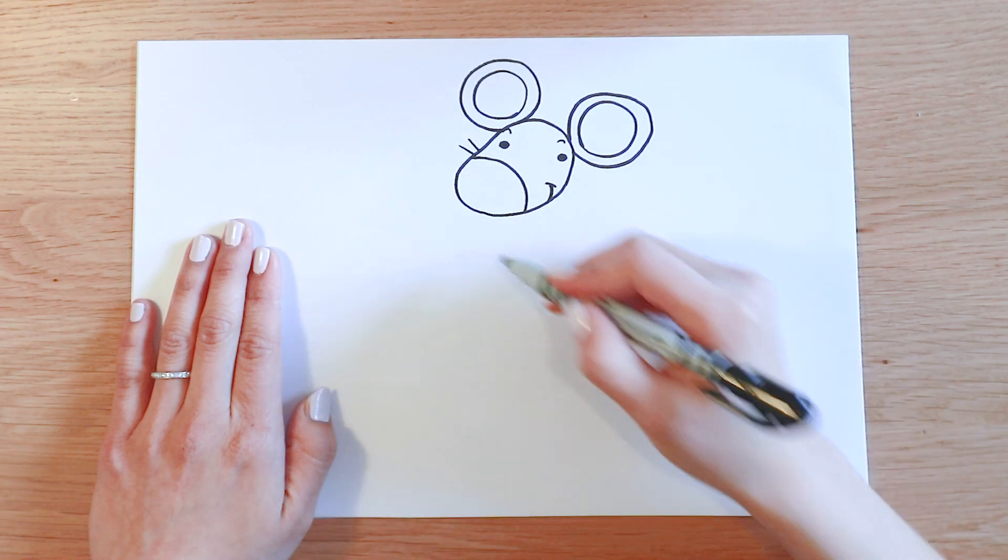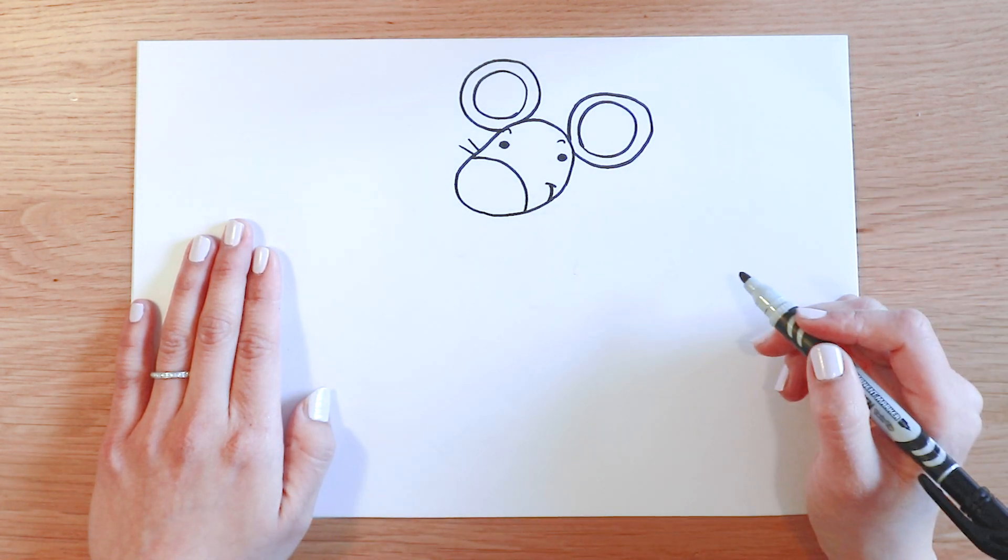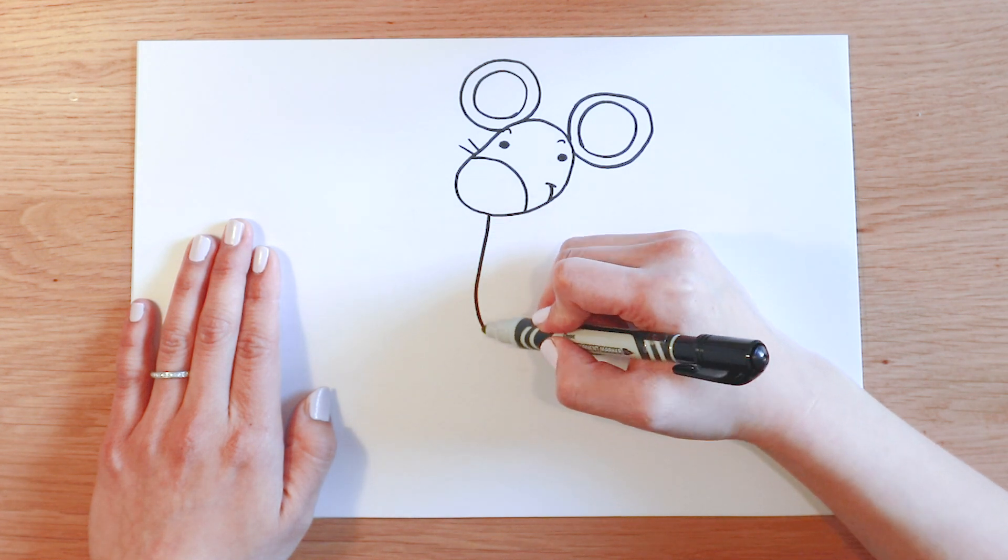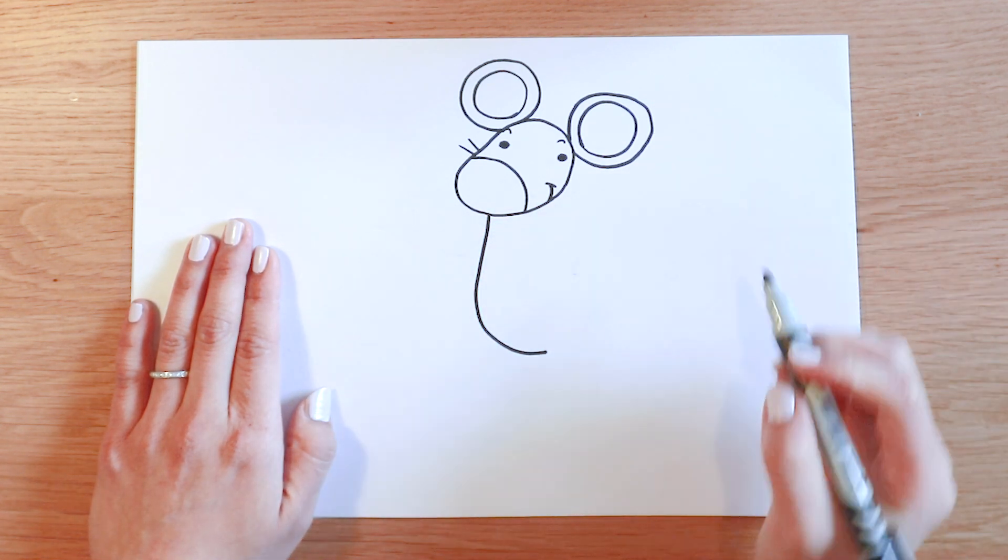Now I'm gonna draw his body. Draw a big U-shape from under his nose, turn around towards his head.